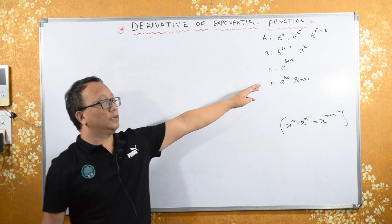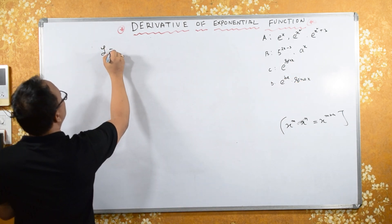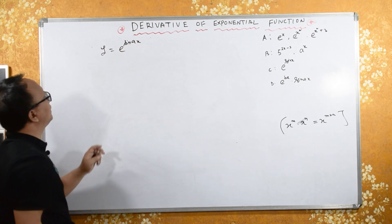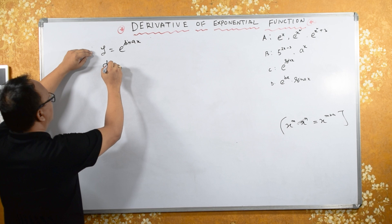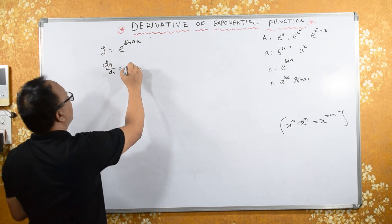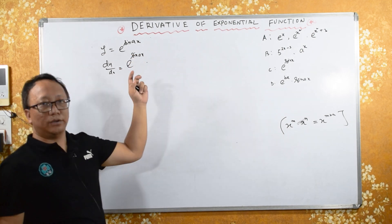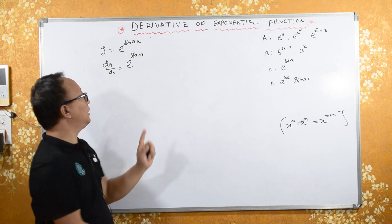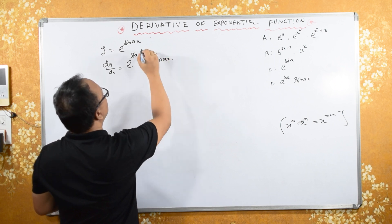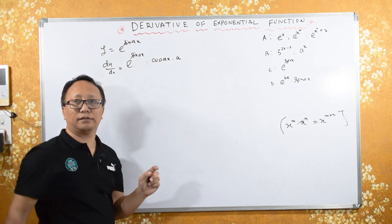If y equals e raised to sin(ax), then dy/dx — keep e raised to sin(ax) as it is, and differentiate sin(ax) with respect to x. The differential of sin is cos(ax), and differentiating ax with respect to x gives a. So dy/dx equals e raised to sin(ax) into cos(ax) into a.